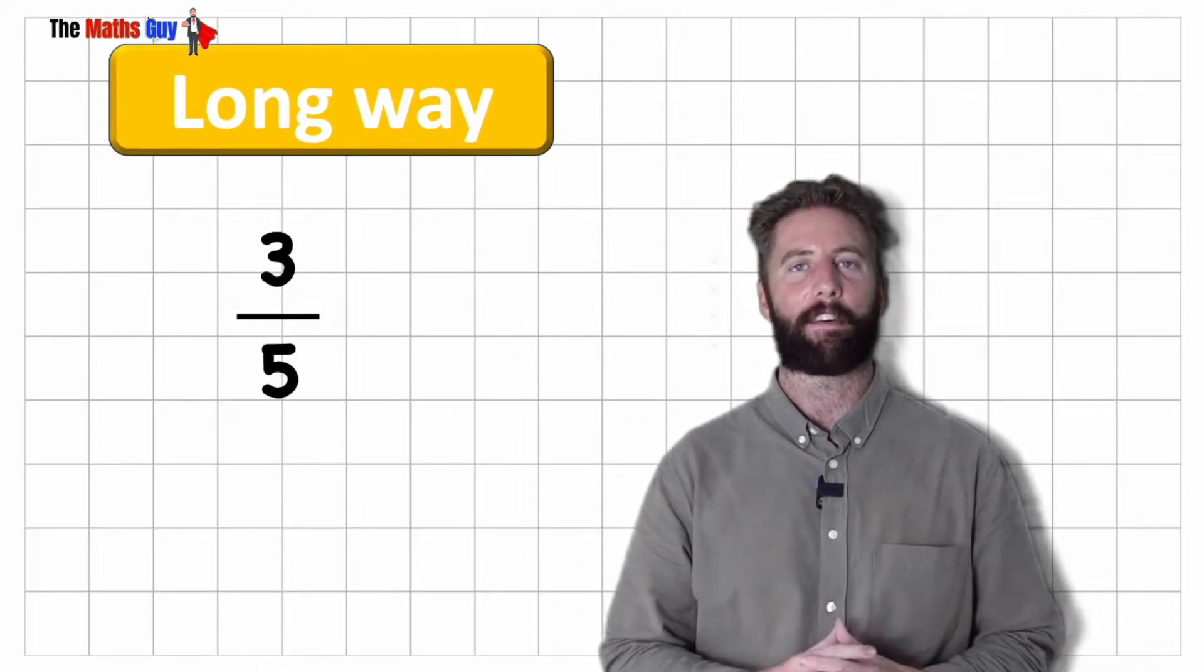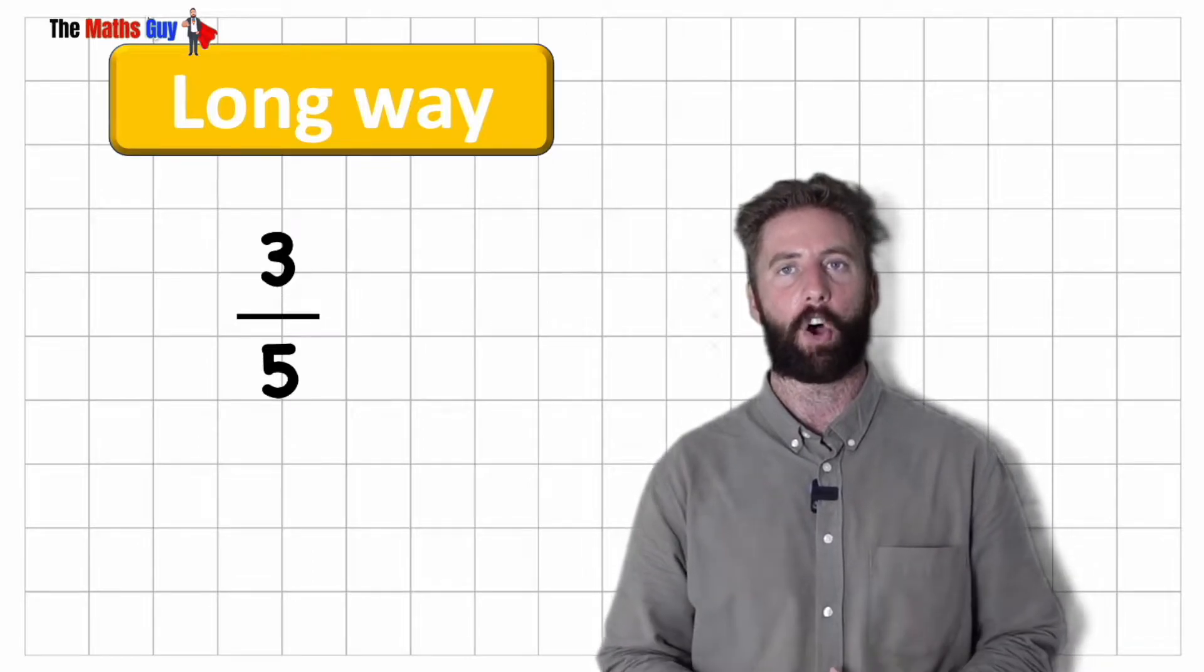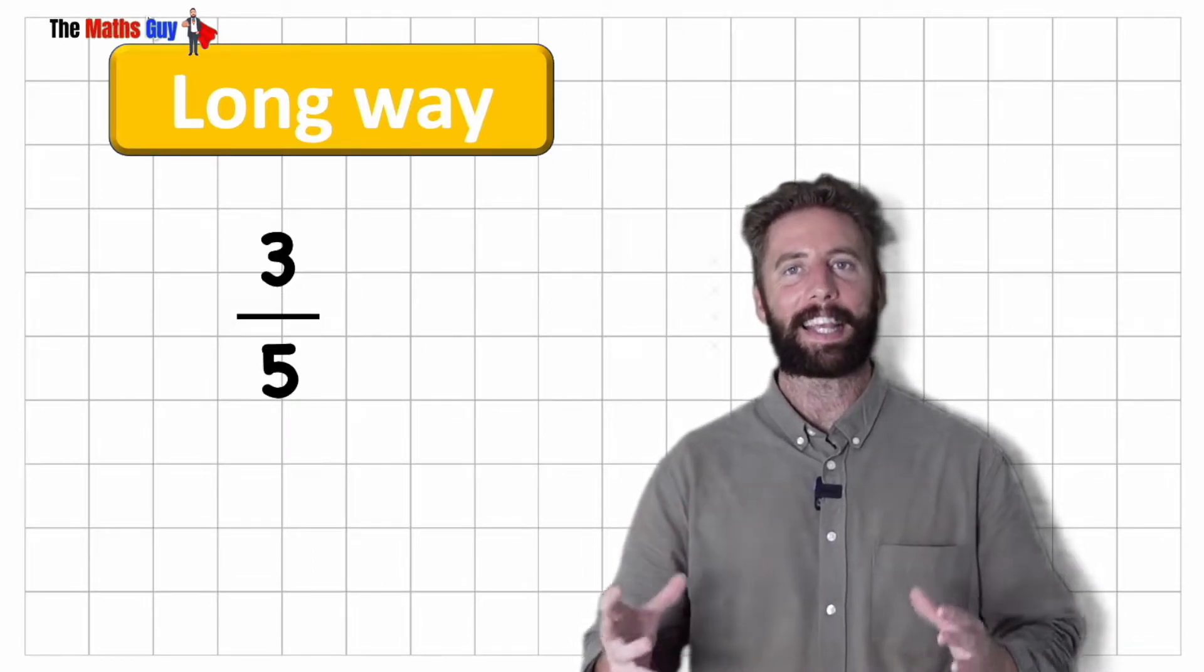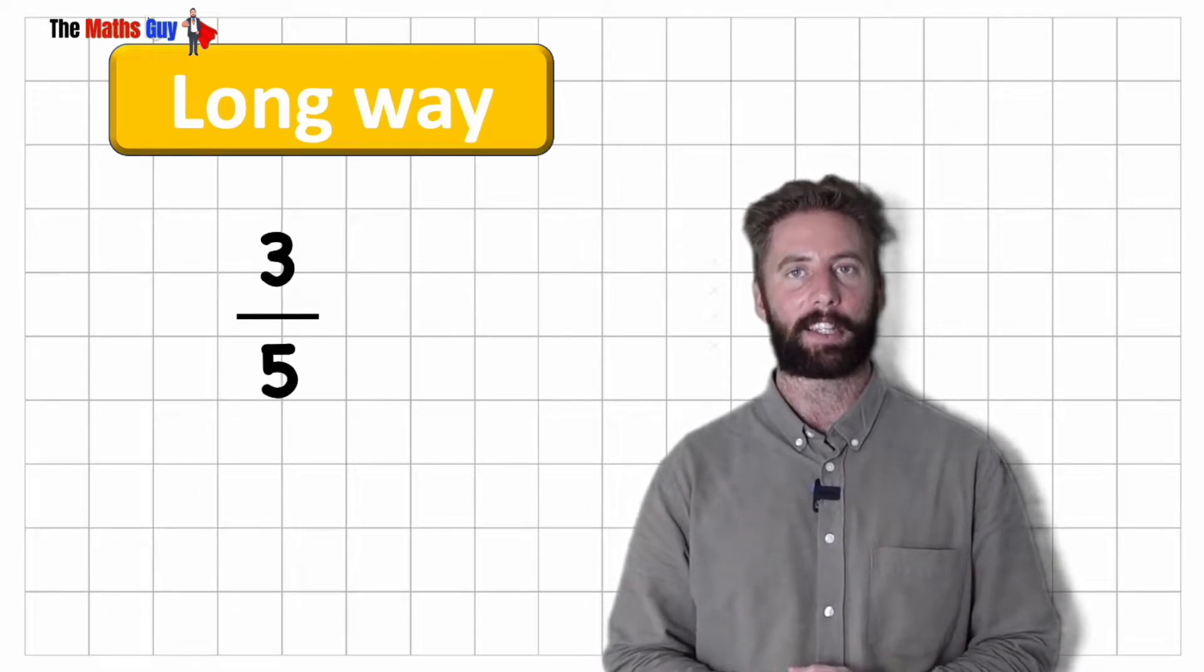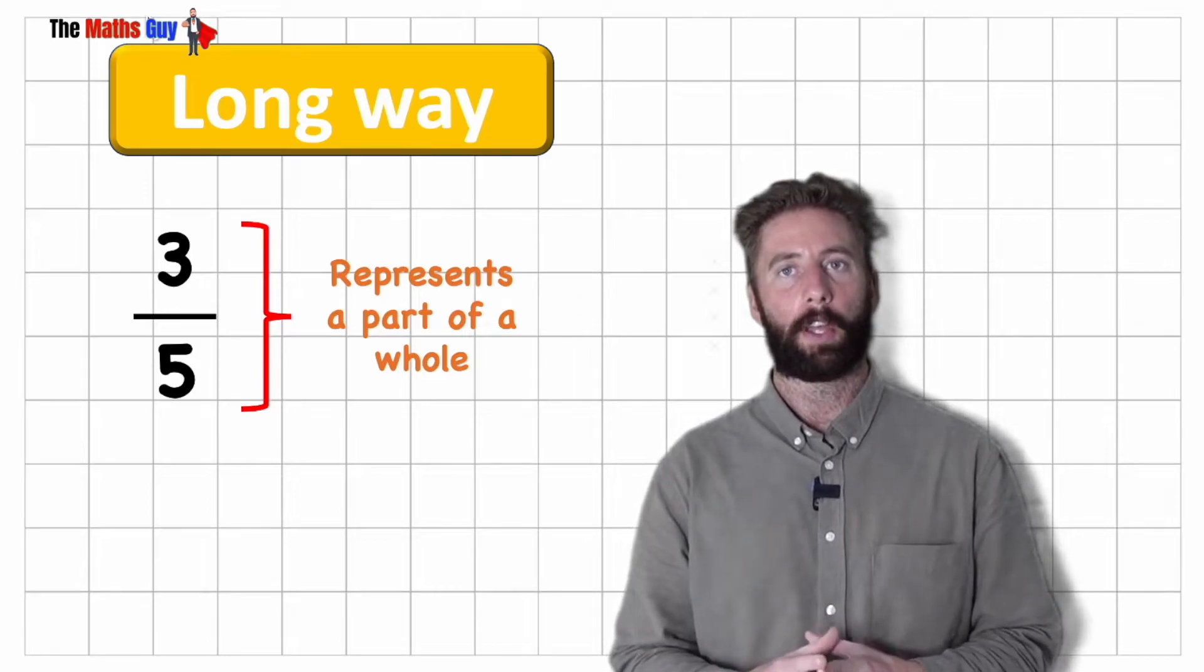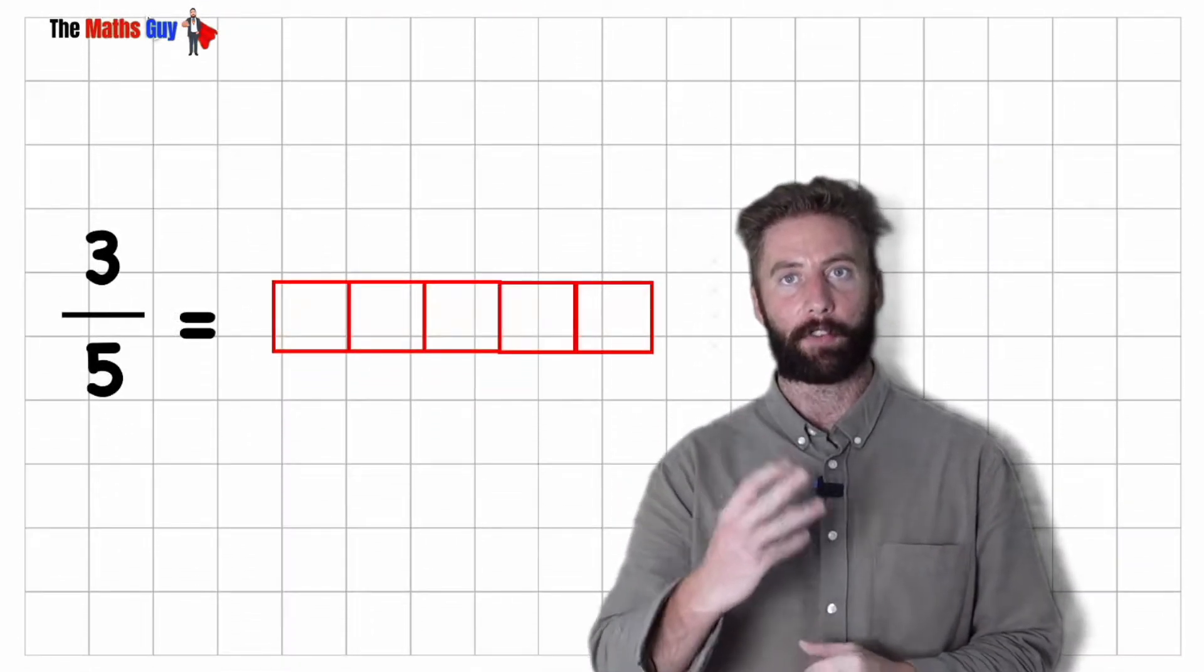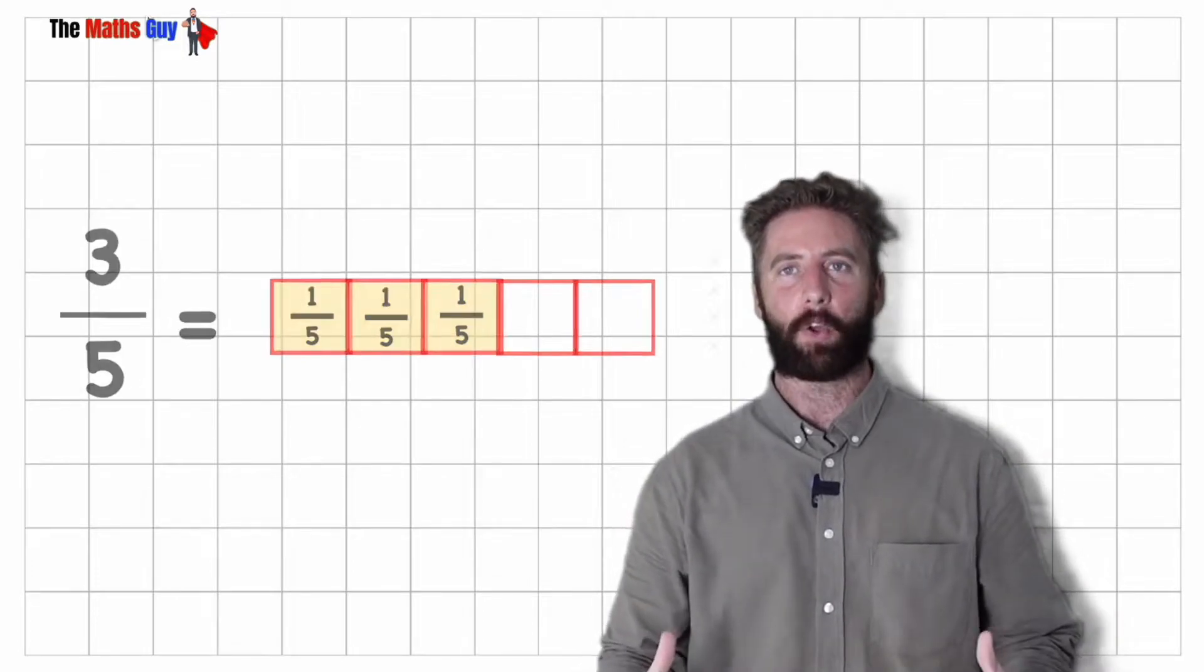Okay let's have a look at our first fraction then. Let's have a look at 3 fifths or 3 over 5. Now let's think about what this fraction actually is. A fraction is a part of a whole so it's less than 1. So this was saying that if our 1 was chopped into 5 we only have 3 parts of it.